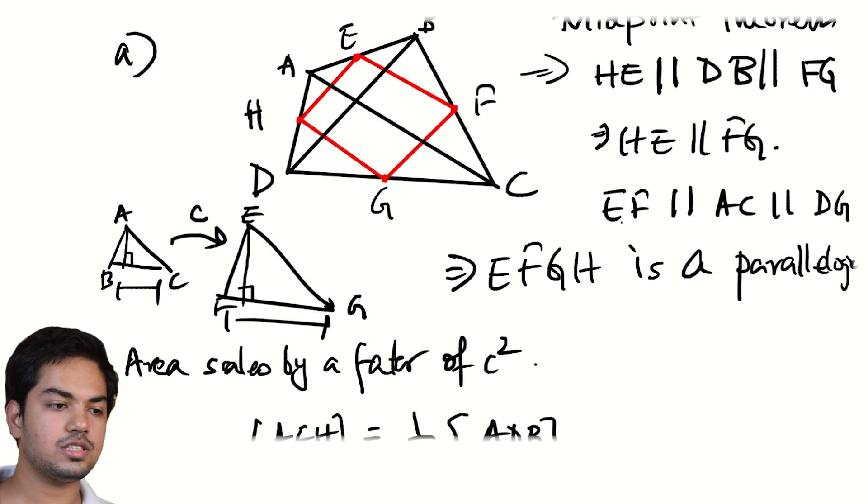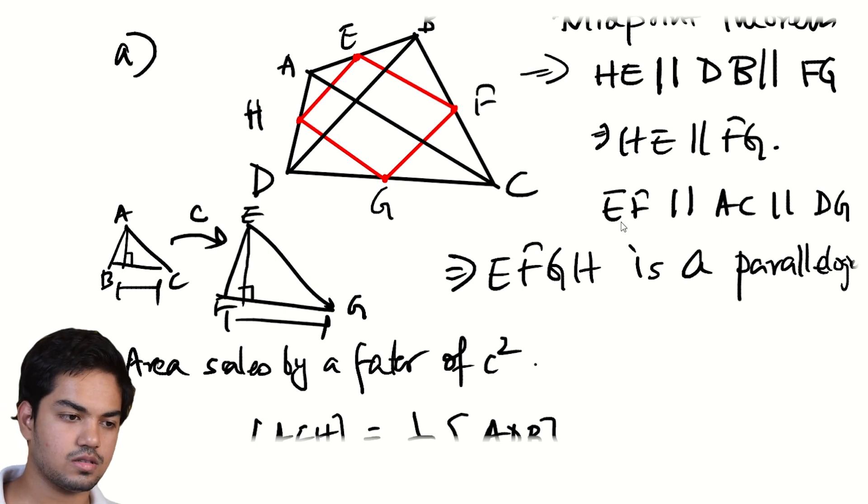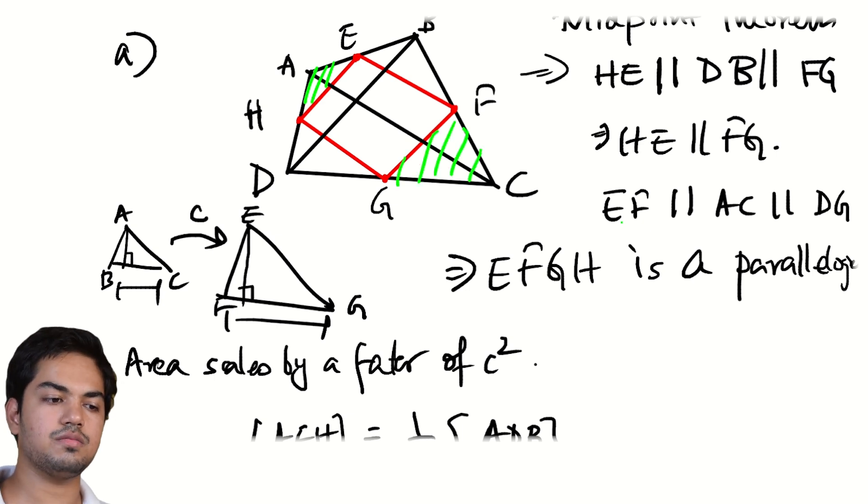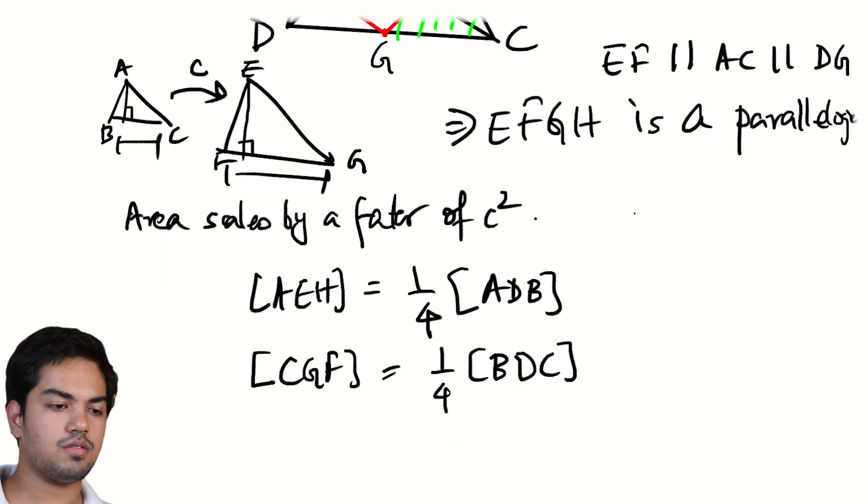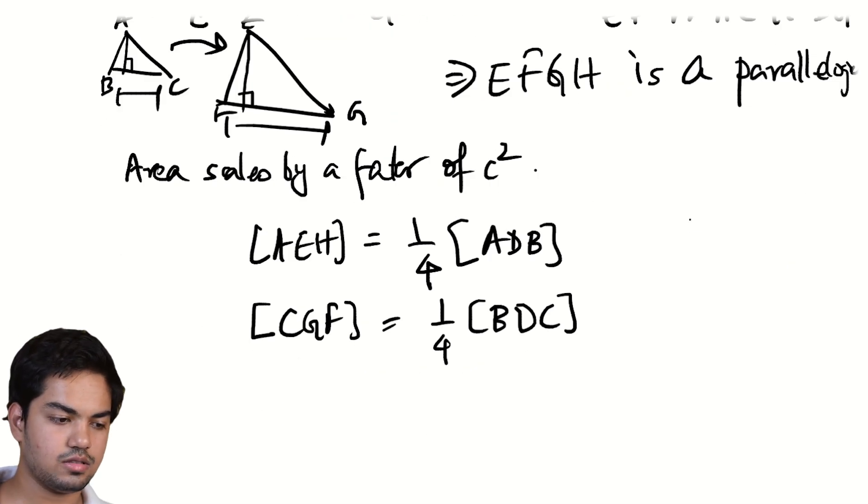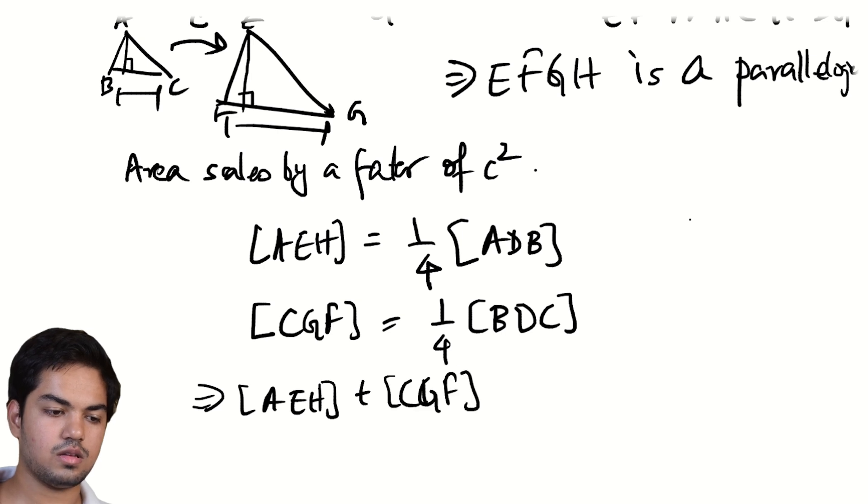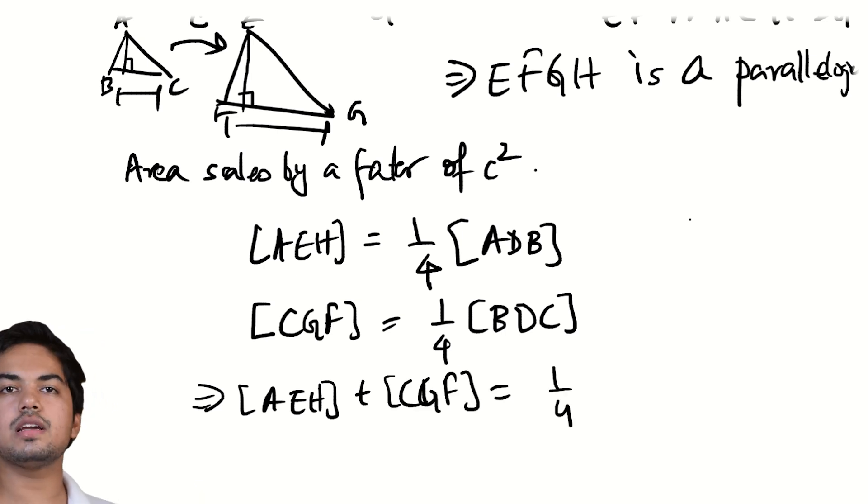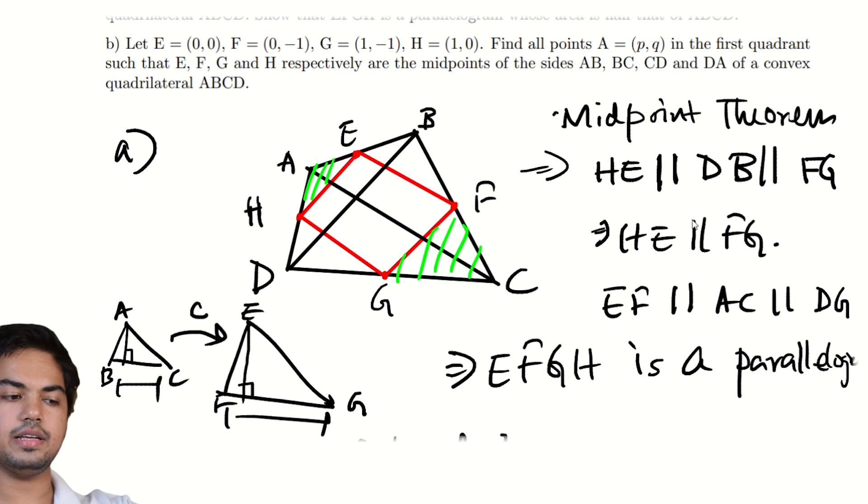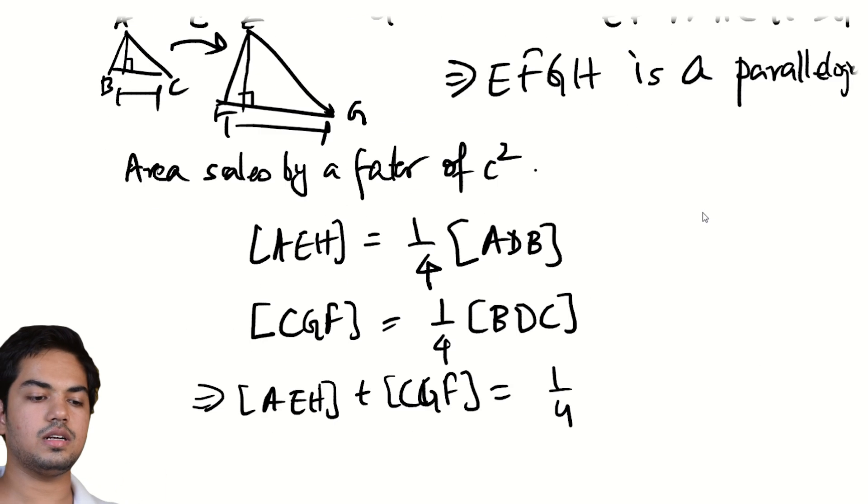Similarly, the area of CGF. I'll draw these regions out. So AEH, we're done. Similarly, CGF is one fourth the area of BDC. Finally, we can add these two to get that AEH plus CGF equals one fourth of the area of the entire quadrilateral, right? ABD, BDC add up to the area of the entire quadrilateral.